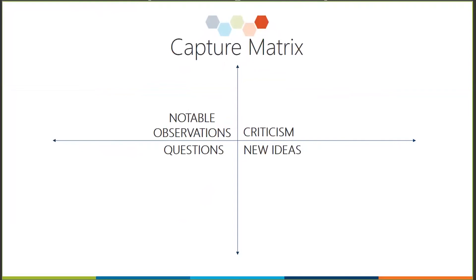A tool you can consider using during your testing phase is what we call a capture matrix, broken up into four quadrants: you're capturing notable observations, capturing their criticism, capturing questions they had while using it, and their ideas — or even your new ideas. Watching a user use the prototype has actually spawned new ideas on how we could evolve that prototype to meet their needs or solve other business problems we may have uncovered. Make sure you're capturing all of that information during the testing phase.